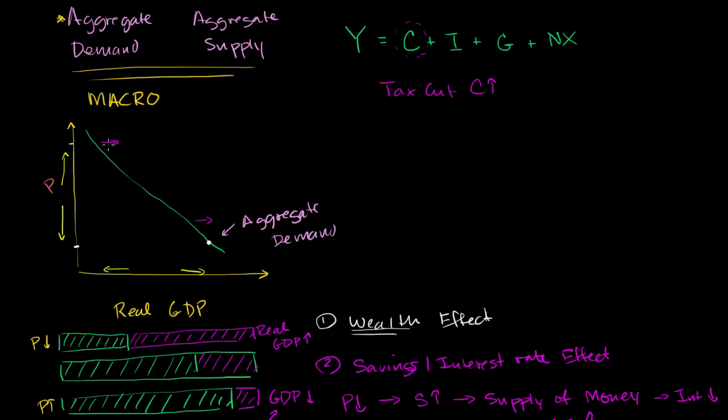At any given level of prices, people are going to demand more. Likewise, if you had a tax increase and that tax increase also didn't have more government spending, then aggregate demand would go the other way. Tax cut, it would shift to the right. If there was a tax increase, all other things equal, it would probably shift to the left, if you believe this model.